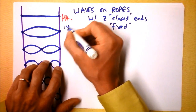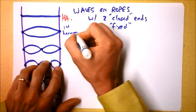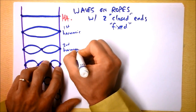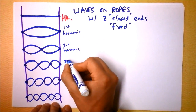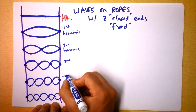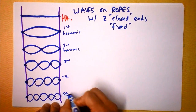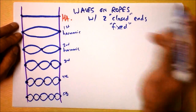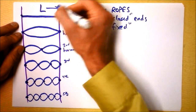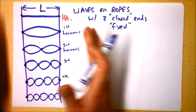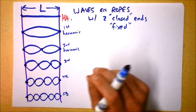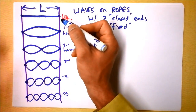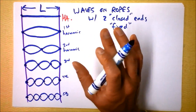Let's name them: first harmonic, second harmonic, third, fourth, fifth. Let's analyze these. We've got a separation of L — that's how long the string is. Never mind the fact that the string seems to stretch a little bit when waves are formed, but that's what strings do — they stretch a tiny bit.